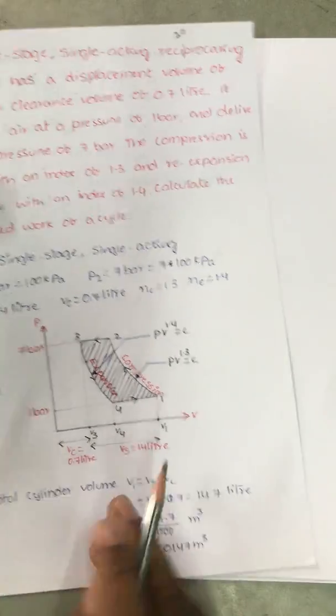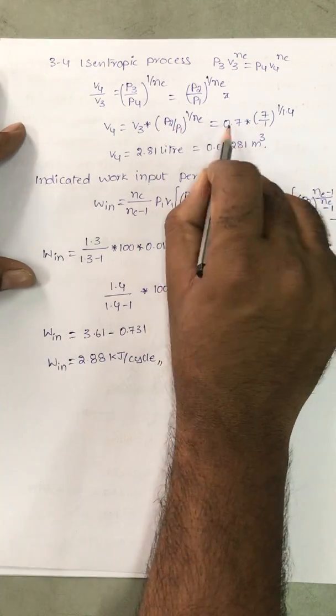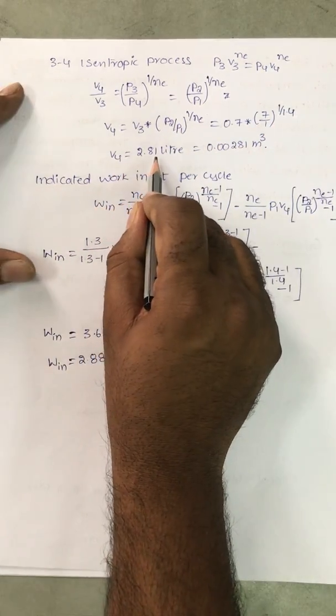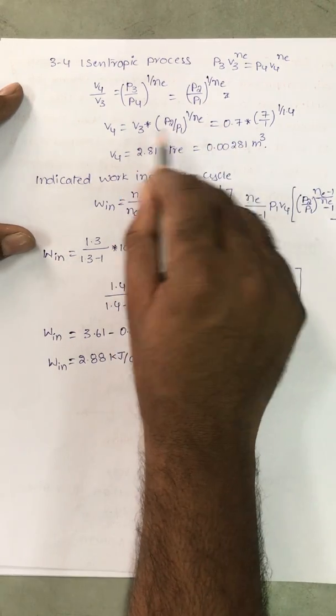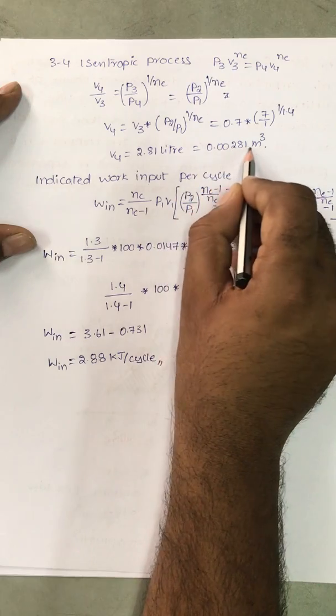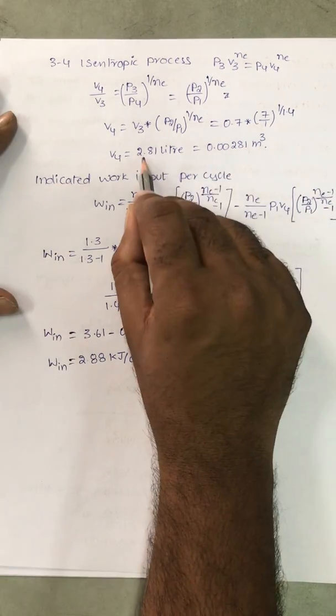V3 is the clearance volume 0.7. V4 equals 0.7 into 7 by 1 all power 1 by 1.4. You will get V4 is equal to 2.81 liter. Then you can convert liter into meter cube by dividing by 1000.